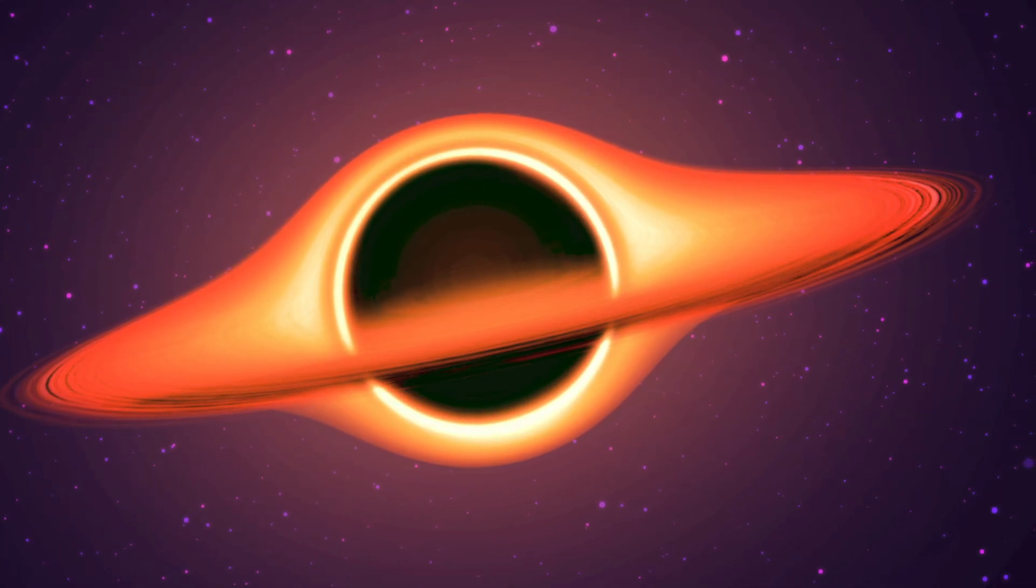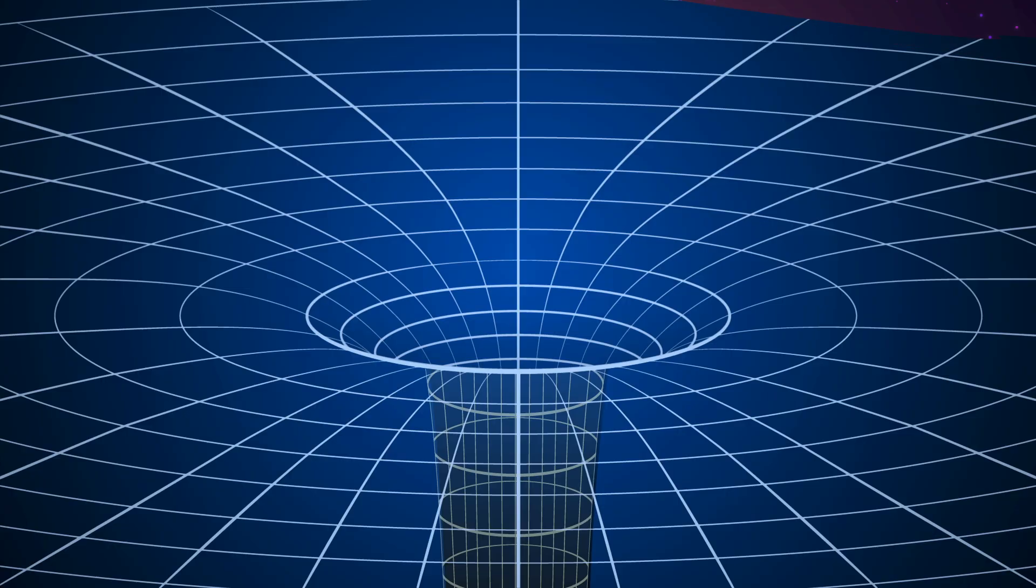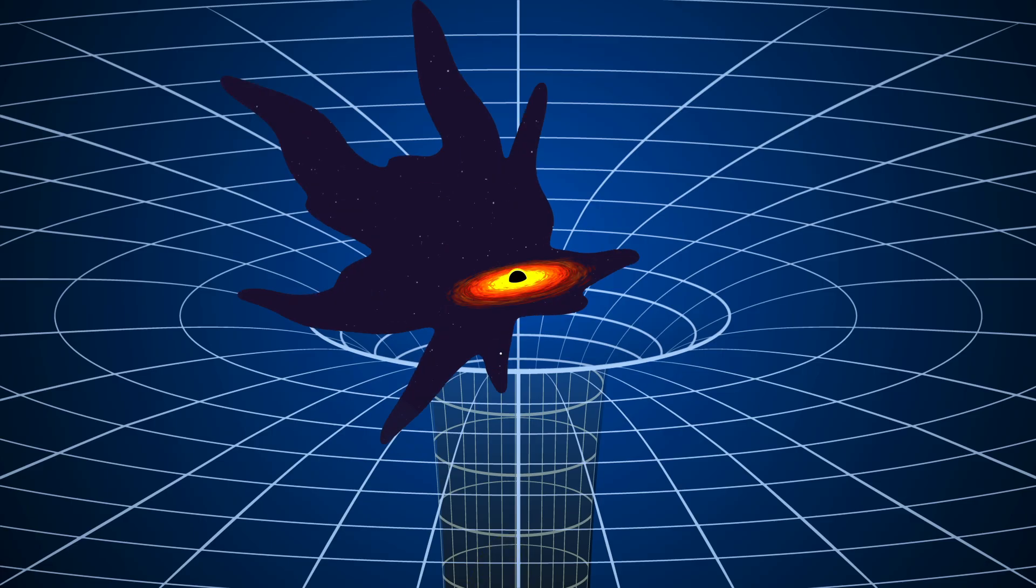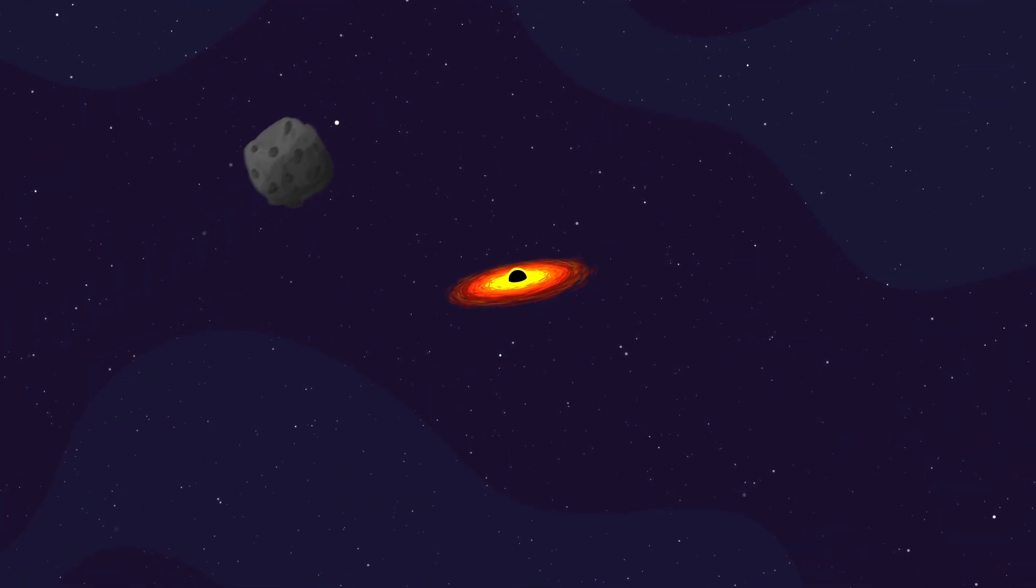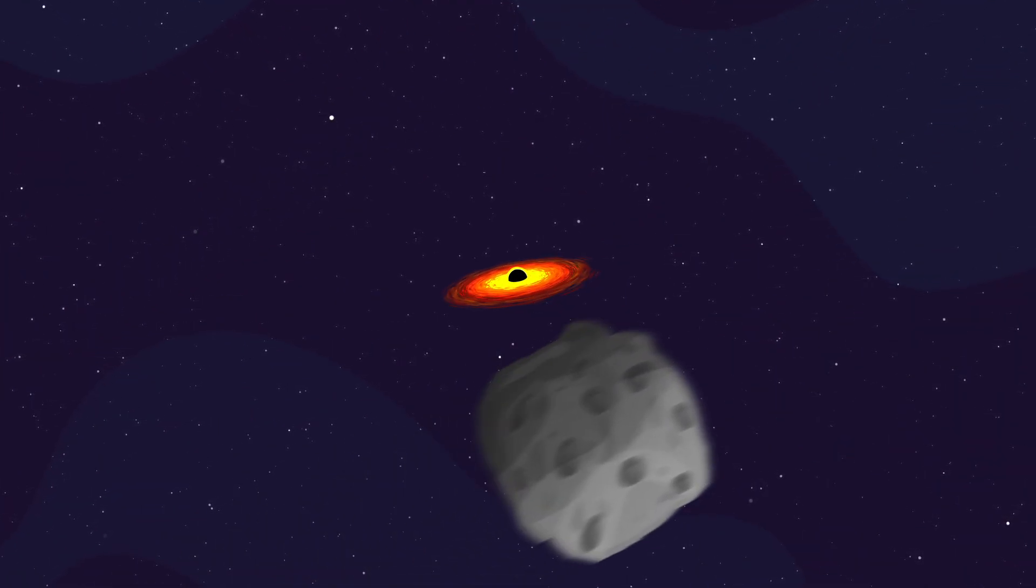If an object gets close to a black hole's event horizon, it may experience extreme tidal forces capable of distorting matter. But at great distances, a black hole's gravity is similar to other objects in space.